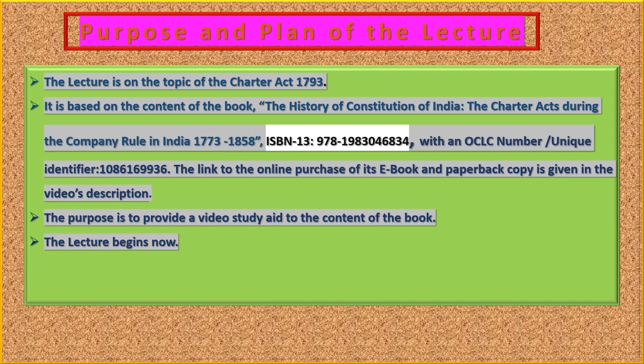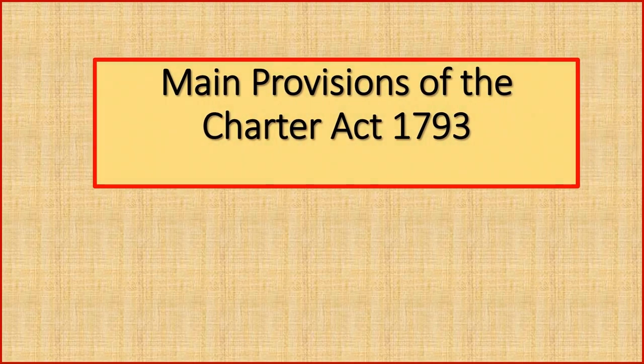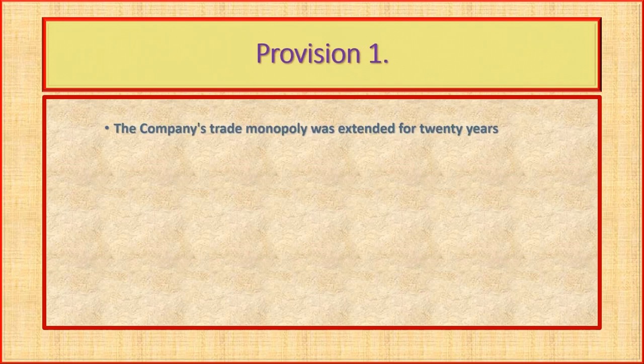The lecture begins now. Here is a brief survey of the main provisions of the Charter Act 1793. Provision 1: the company's trade monopoly was extended for 20 years, and private individuals were allowed to trade to the extent of 3,000 tons of shipping.